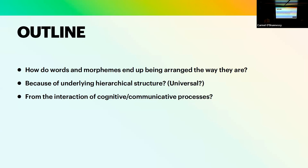The question in a way is just a very basic one: how do words and morphemes in language end up being arranged the way they are? There are very popular answers along the lines of an underlying hierarchical structure applying at least to words if not to morphemes, and in many versions that's also a universal structure. The answer I'm pursuing today is a different kind, where that arrangement of words and morphemes emerges from the interaction of cognitive and communicative processes.